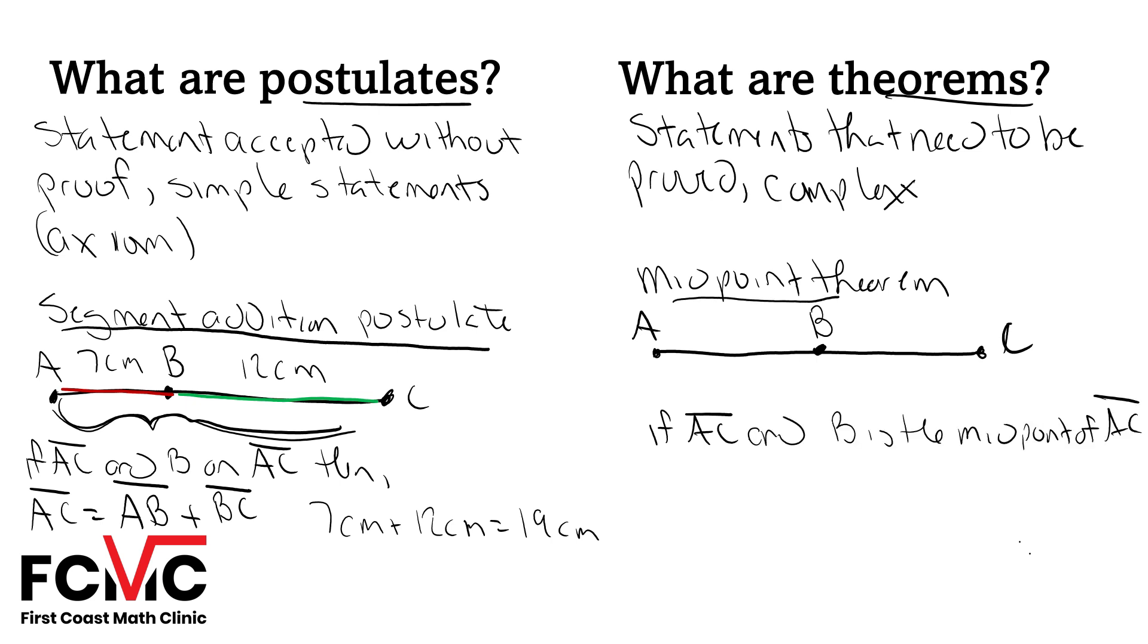Our midpoint theorem gives us the relationship between our two smaller segments, AB and BC, and our larger segment, AC. It tells us that,